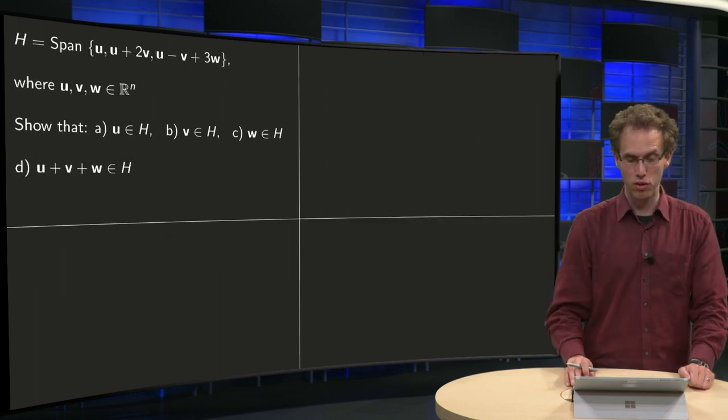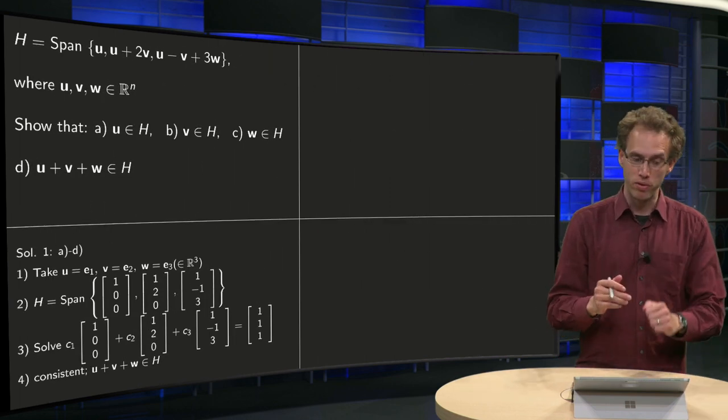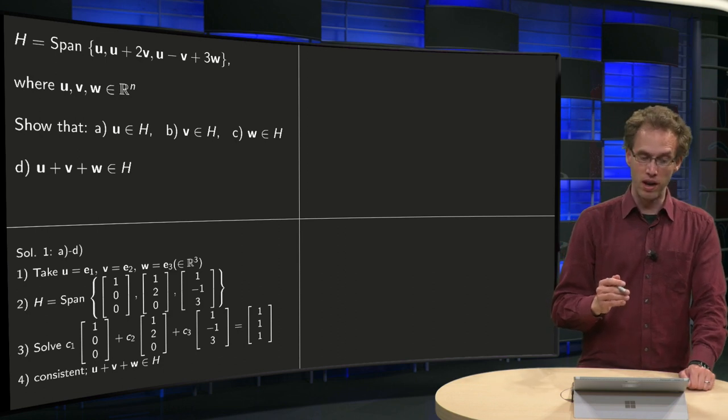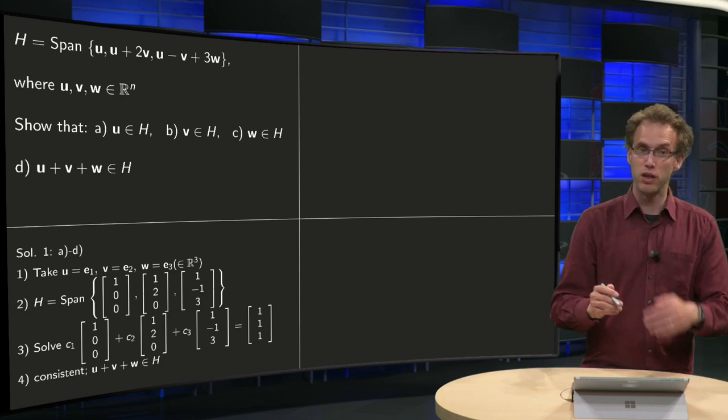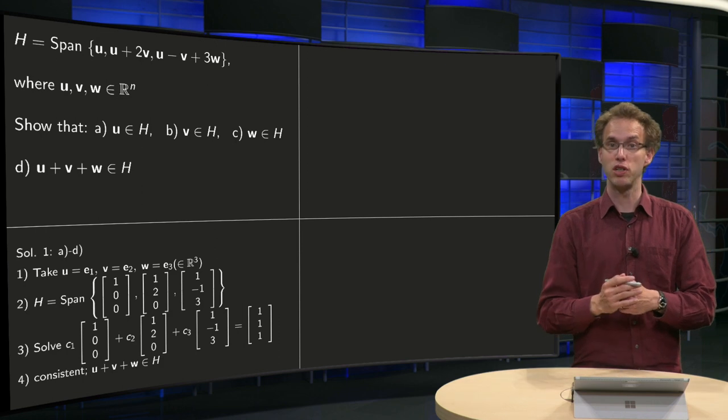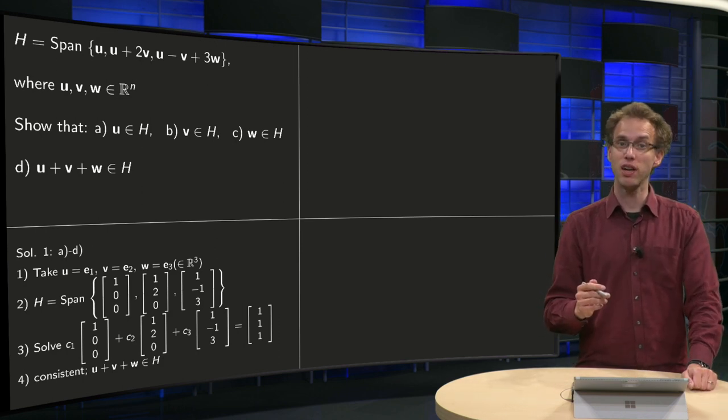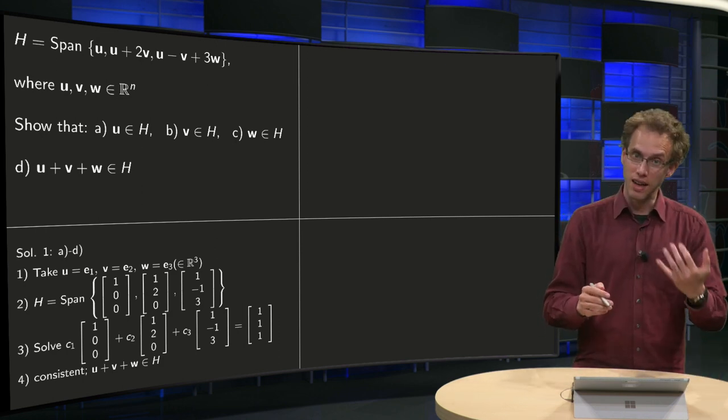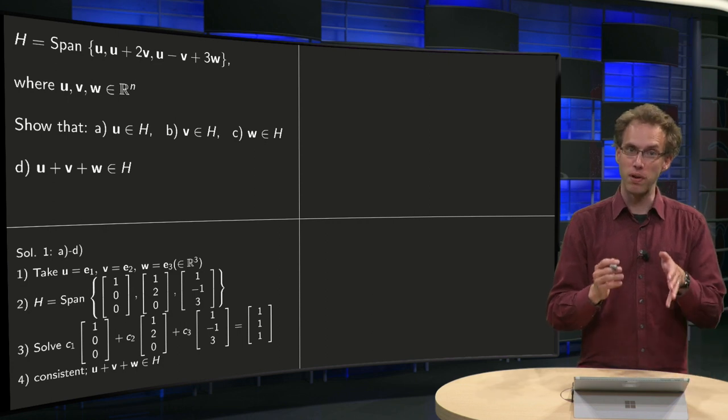So how can we try to solve this problem? Well, what we could do is to take U equals E1, V equals E2 and W equals E3 in R³. And then we can compute H, it's the span of (1,0,0).